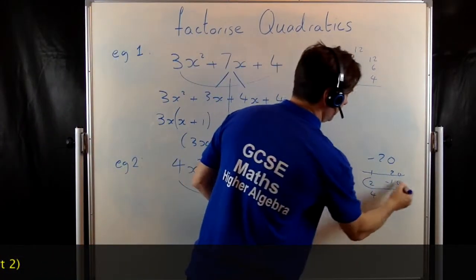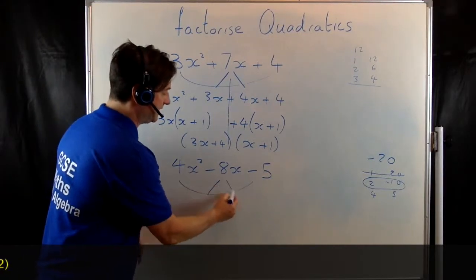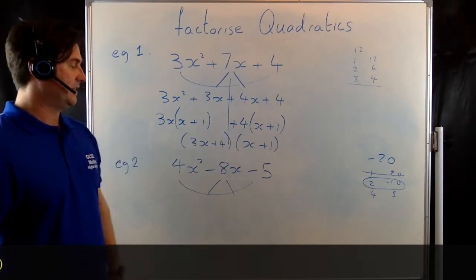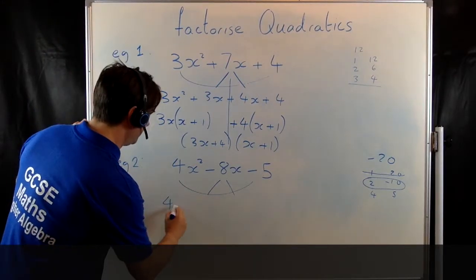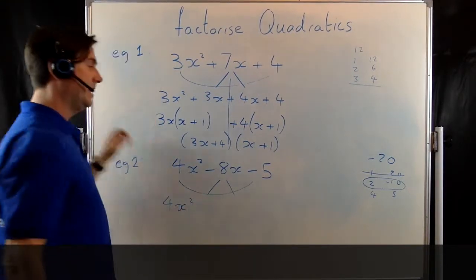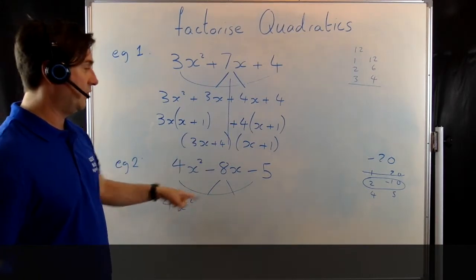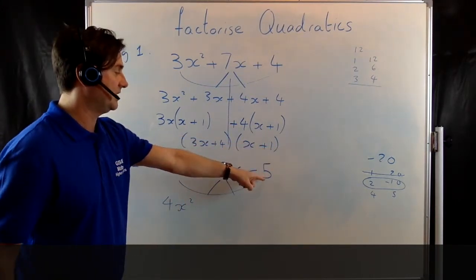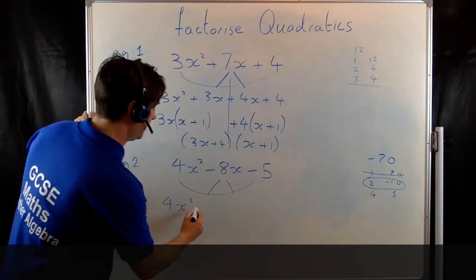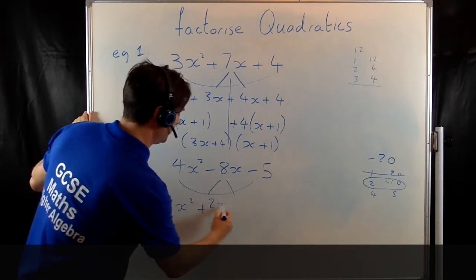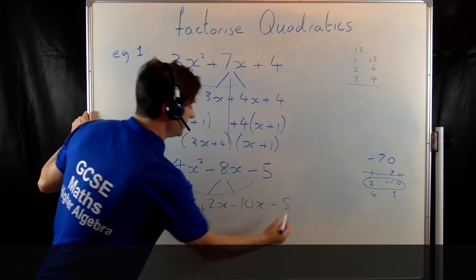So this is my combination I'm looking for. I now have to split this negative 8 into the 2 and the negative 10. I'm going to do it this way round. So I've got 4x squared. Now the 2 factorise better with the 4 because the 10 factorises better with the negative 5. So I'm going to do it this way round. So 4x squared plus 2x minus 10x minus 5.